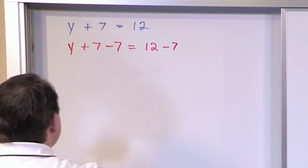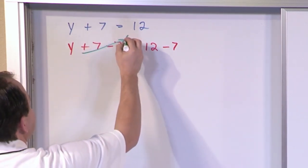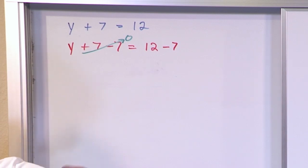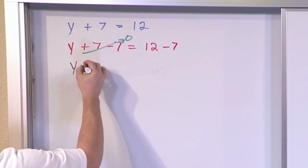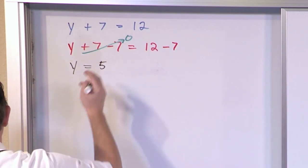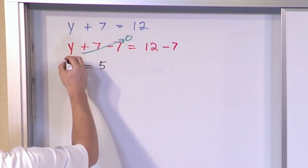And by the way, why are we subtracting 7? Because 7 minus 7 is 0, so we basically are trying to get y all by himself. So on the left, all we have is y, and on the right, we have 12 minus 7, which is 5, and that is the final answer.